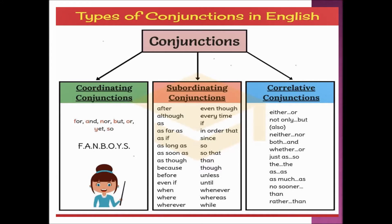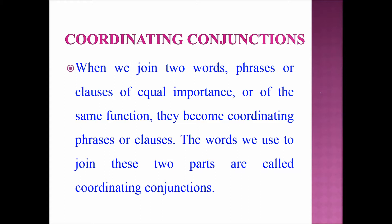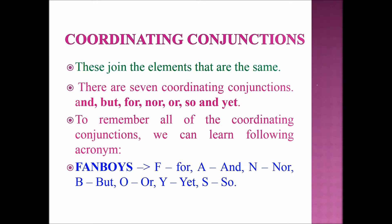Now let's see each type one by one in an elaborate manner. A conjunction that joins words, phrases, clauses, or sentences that are of equal importance is called a coordinating conjunction. We use coordinating conjunctions to connect two main or coordinating clauses — when we join two words, phrases, or clauses of equal importance. These conjunctions join elements that are the same.